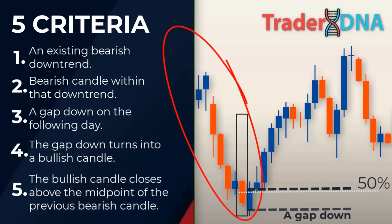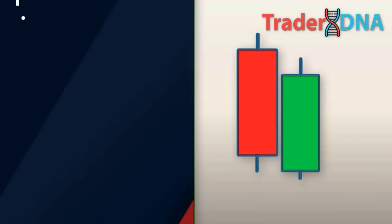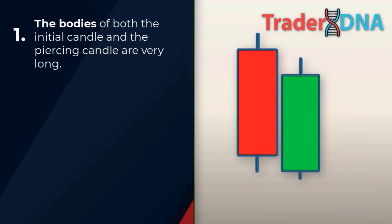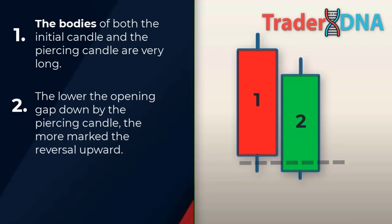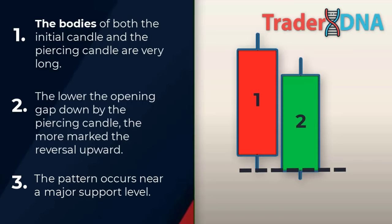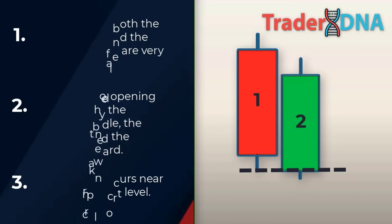Traders evaluate the significance of the piercing pattern as a bullish signal by the following factors: first, the bodies of both the initial candle and the piercing candle are very long; second, the lower the opening gap down by the piercing candle, the more marked the reversal upward; third, the pattern occurs near a major support level, especially if the gap down is over the support level but the candle's eventual close is above it.